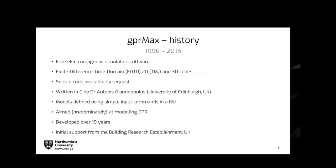GPR Max has been around for some time. It was originally developed in 1996 as two separate code bases — a 2D code and a 3D code — written in C, distributed as binaries, though you could request the source code. Models were built through an input file using fairly simplistic commands. Over the next almost 20 years it was developed in a fairly small-scale way.